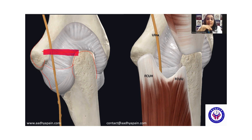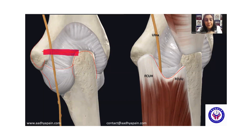The ulnar nerve passes inside this cubital tunnel, and later on it passes between the two heads of the aponeurosis joining the two heads of the flexor carpi ulnaris — that is the humeral head and the ulnar head. We call it the arcuate ligament, and some people believe it is simply an extension of Osborne's retinaculum.